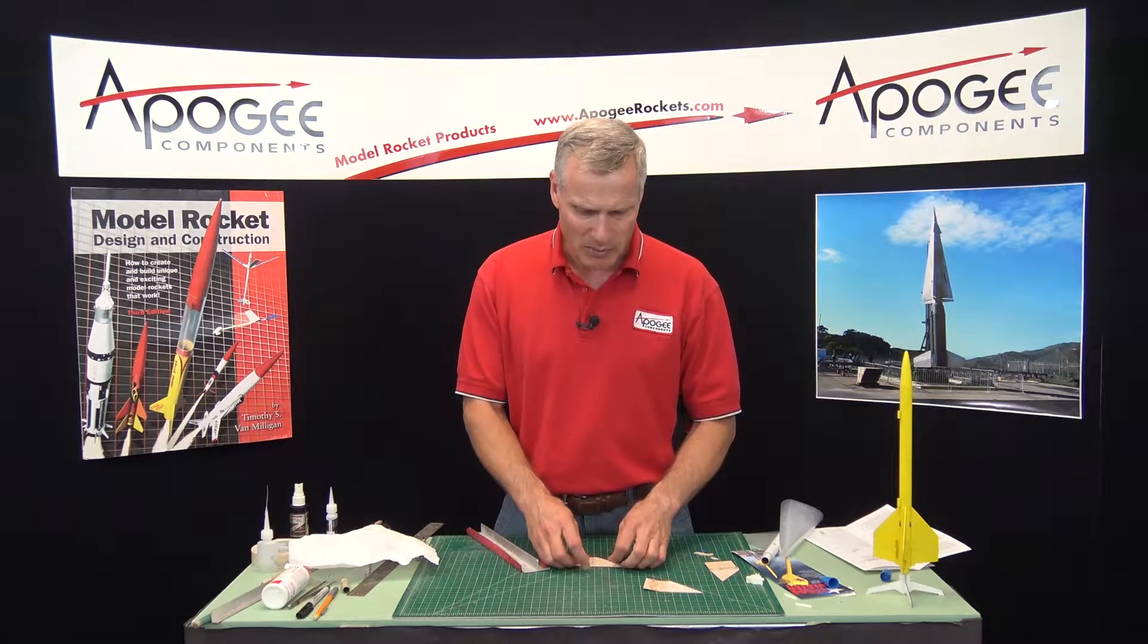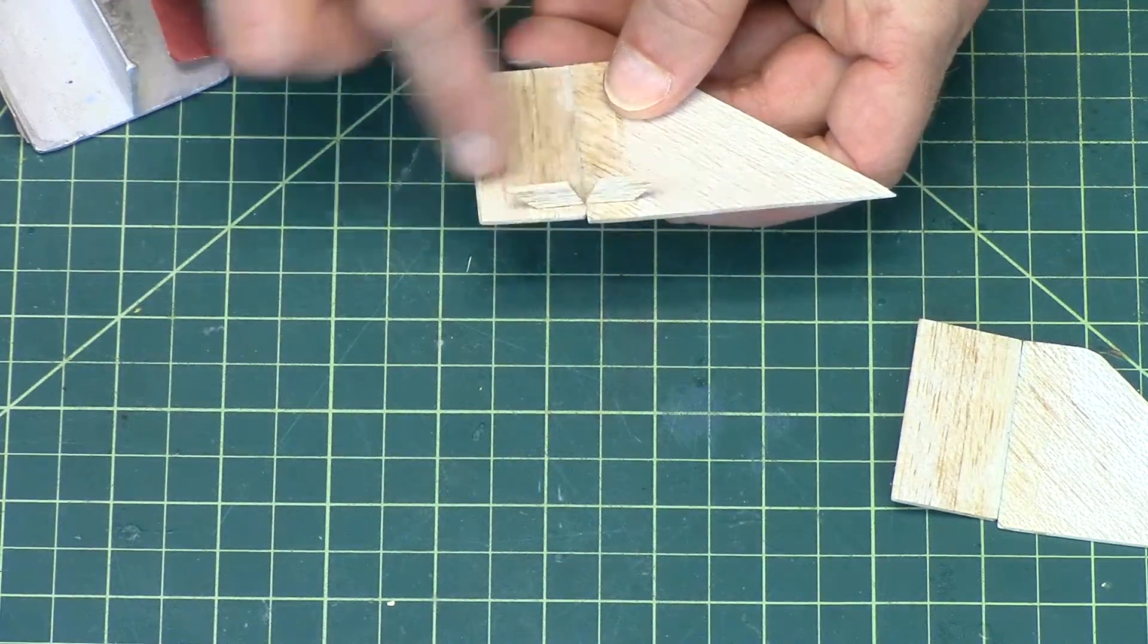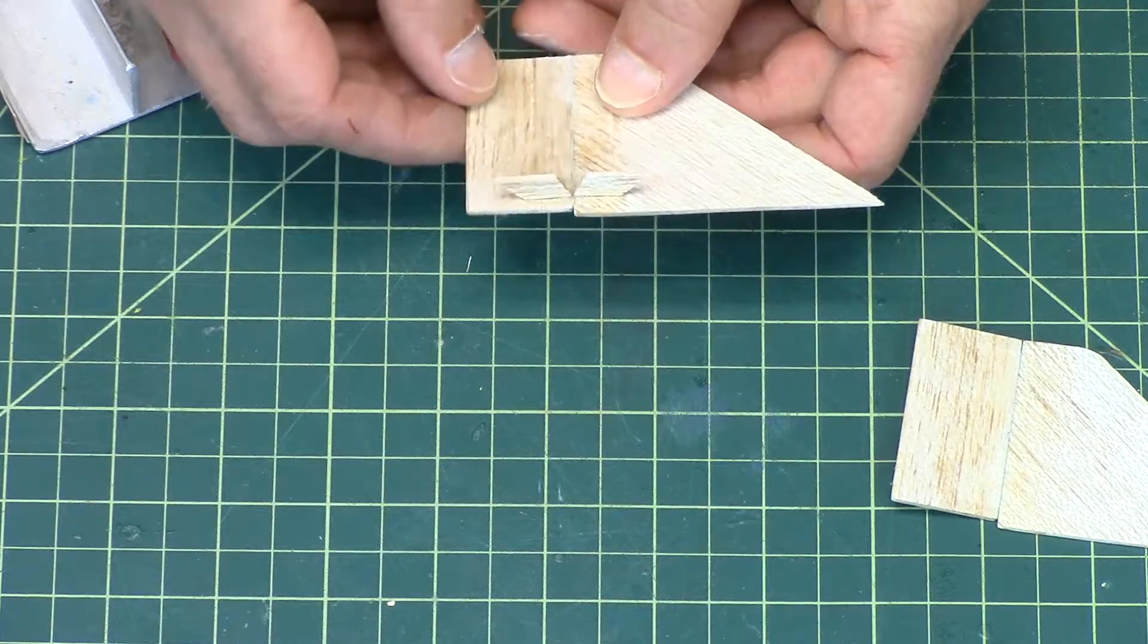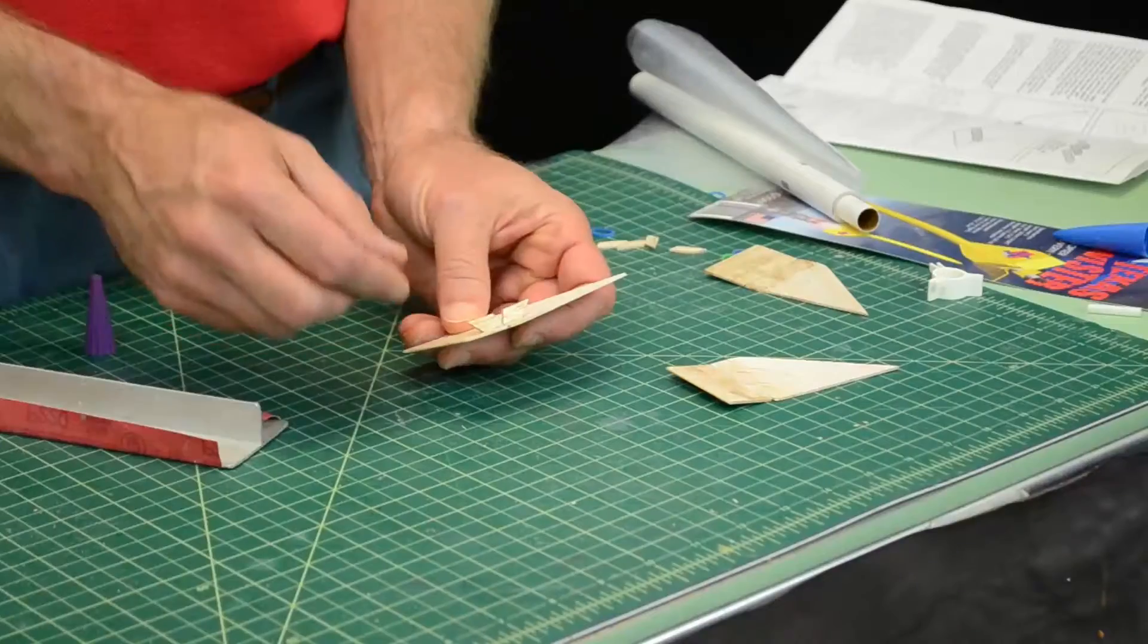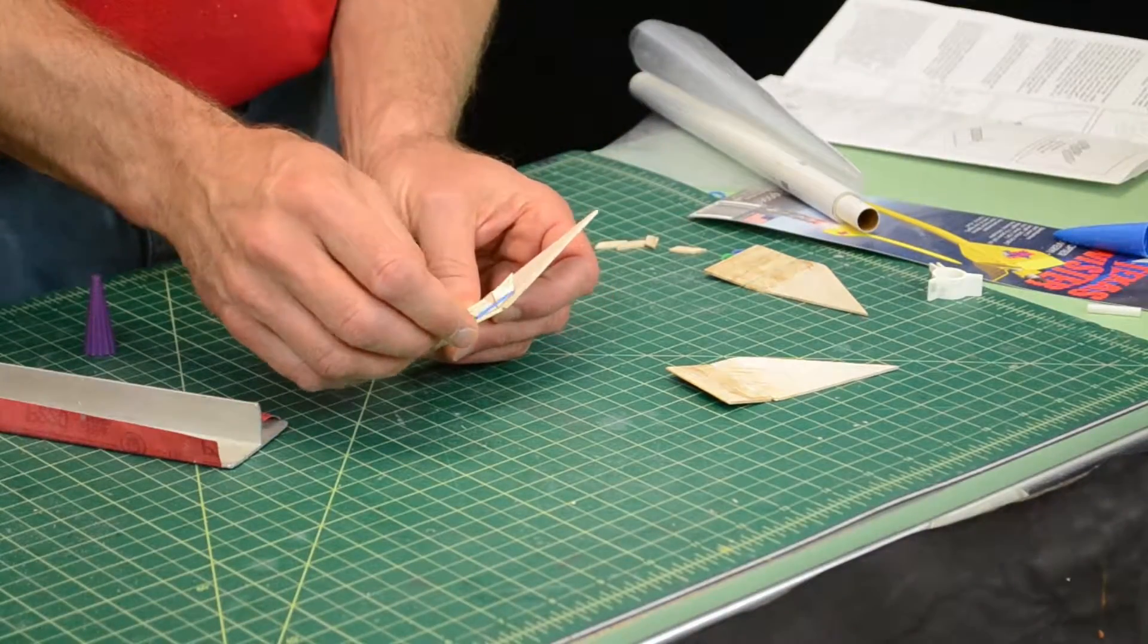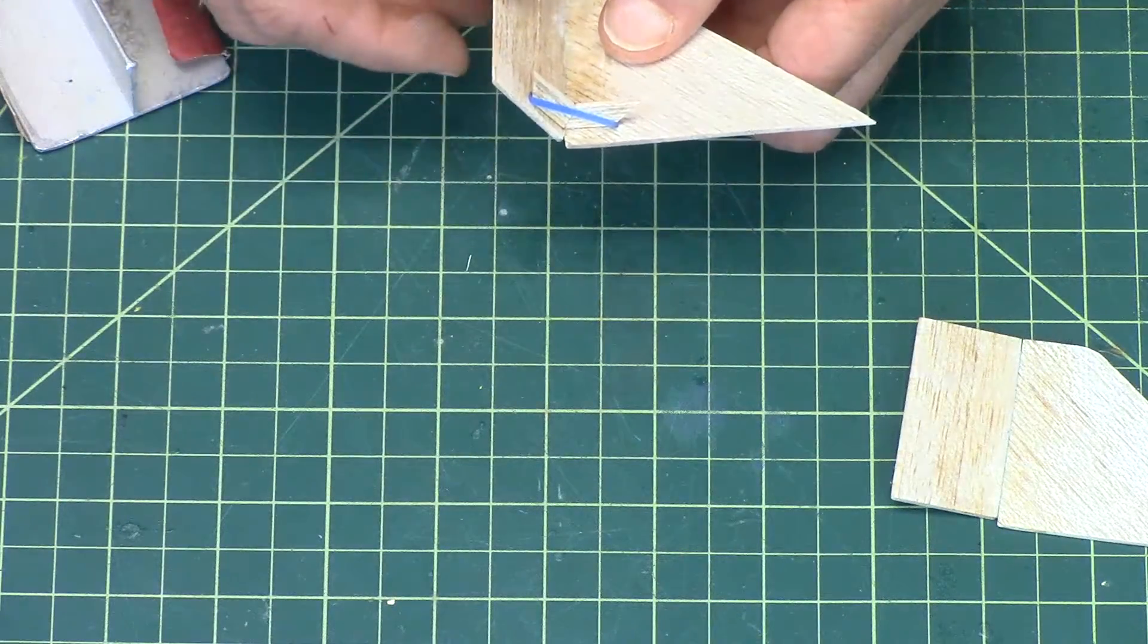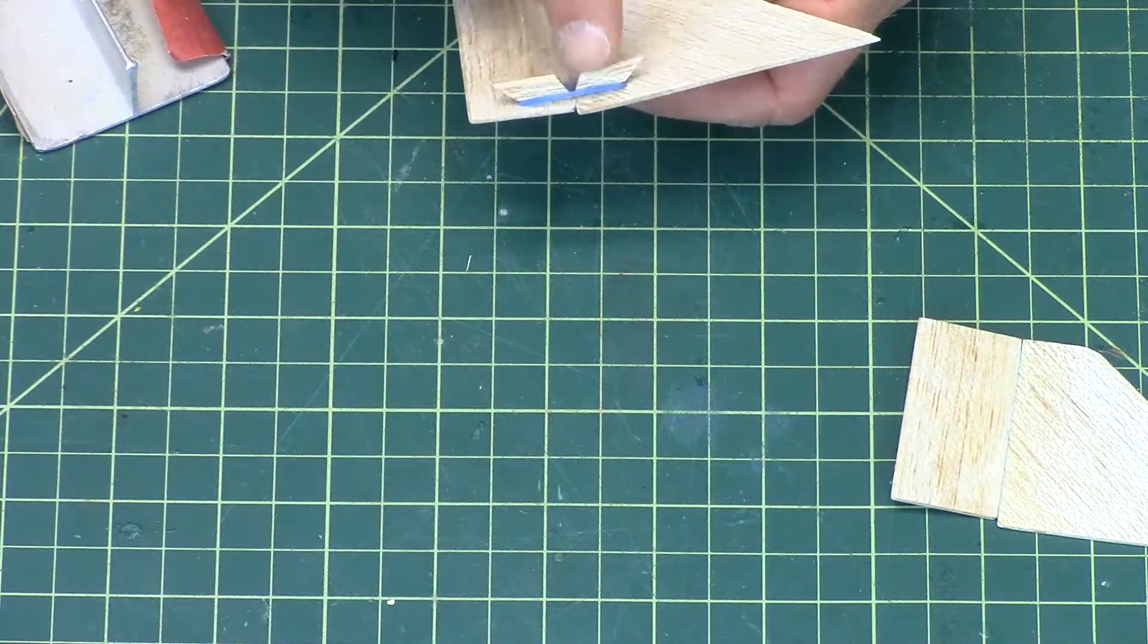And in this step, I want to add these balsa pieces to the fins. What they do is they stop the flap at the correct angle. We put a rubber band on this for flight, and the rubber band will pull it up, and it will stop because of these balsa pieces.